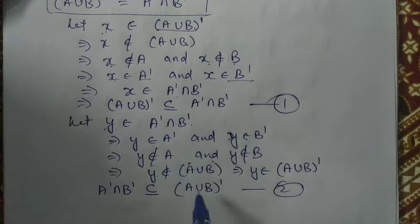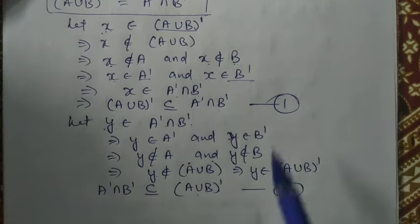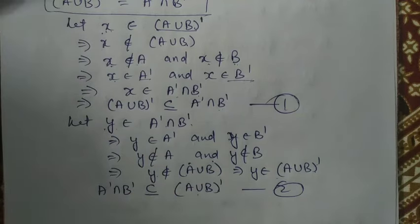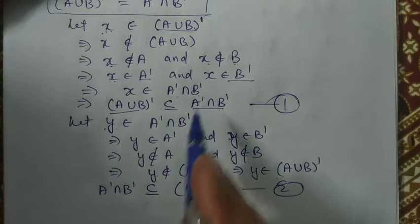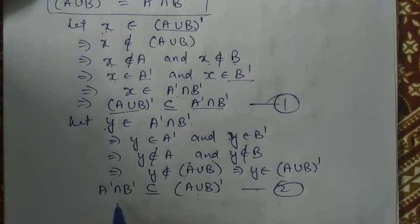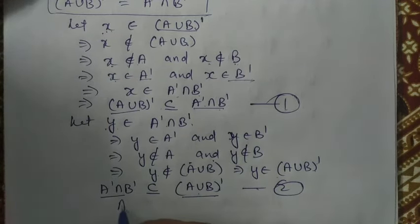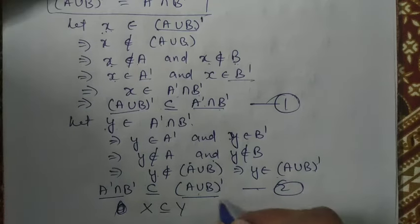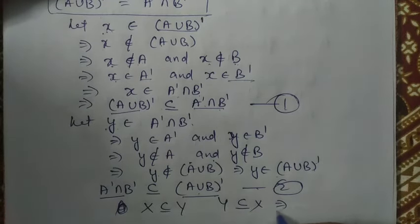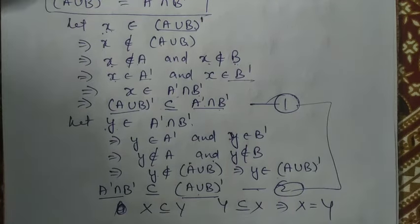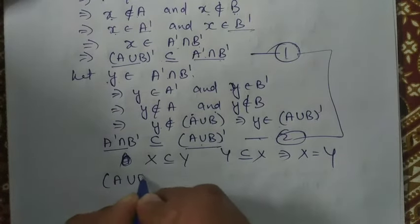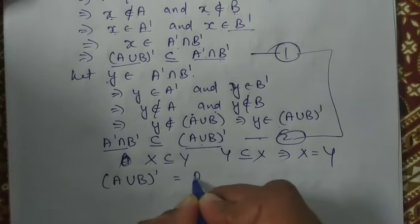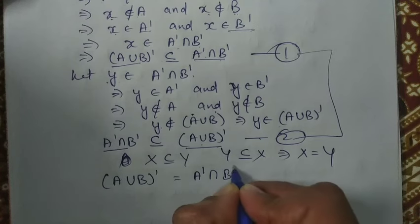Now consider these two results together. In the first part we proved that the complement of A union B is a subset of A complement intersection B complement, and in the second part we proved the reverse. Since each set is a subset of the other, they must be equal. Therefore, from both results we conclude that the complement of A union B is equal to A complement intersection B complement.